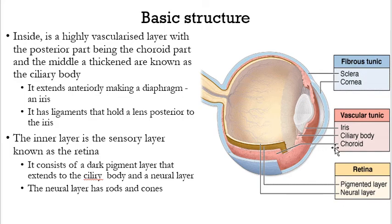This inner sensory layer is known as the retina. The retina is composed of two components. We have the pigmented layer, which is the melanoid lower layer. And then just above that — internally, meaning going into the eye — we have the neural layer. The neural layer is composed of rods, cones, bipolar cells, and a few other cells that we'll look at in detail.